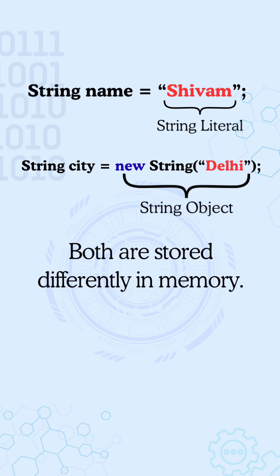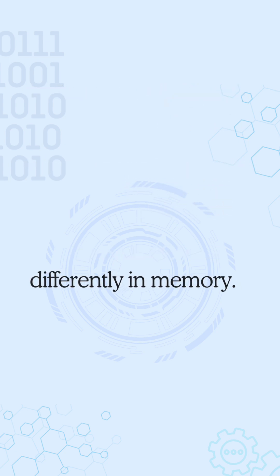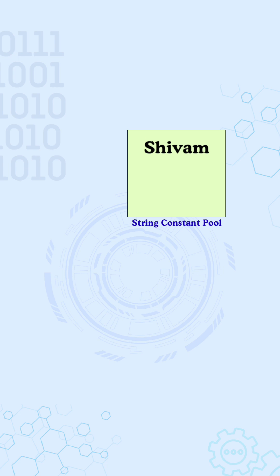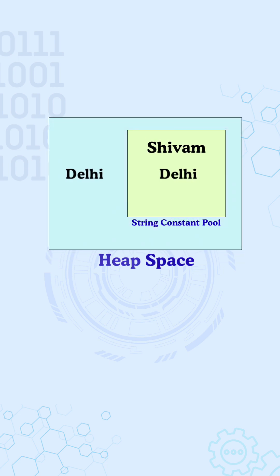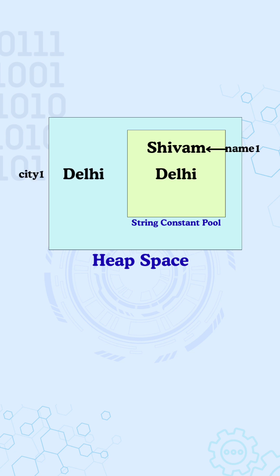Both are stored differently in memory. A literal is stored in a special area meant only for strings called the string constant pool. But a string object is stored in the heap memory as well as the pool. name1 points to the pool, while city1 points to the heap.